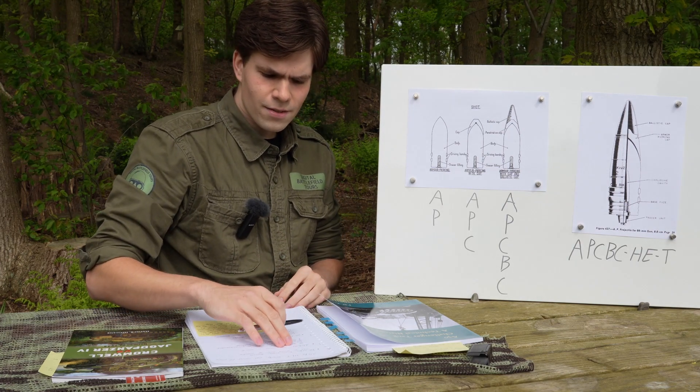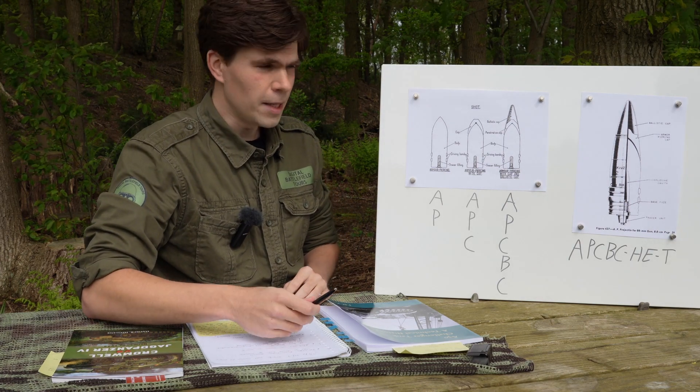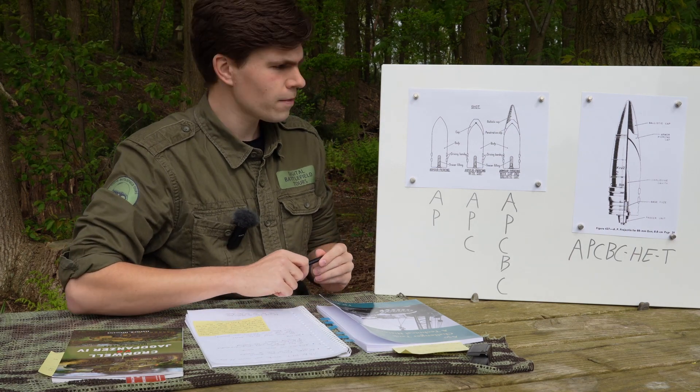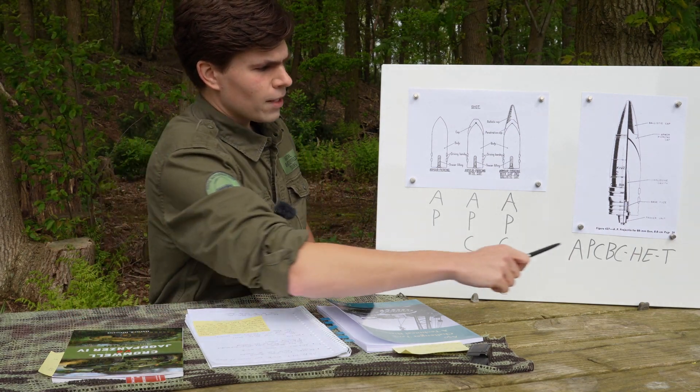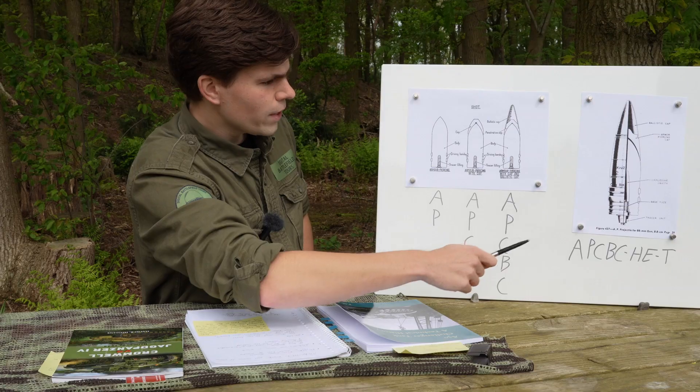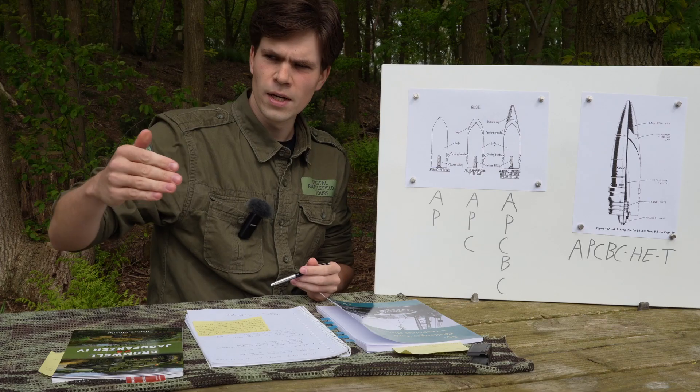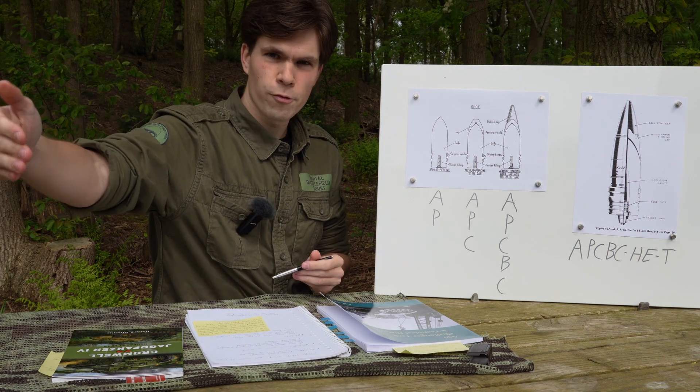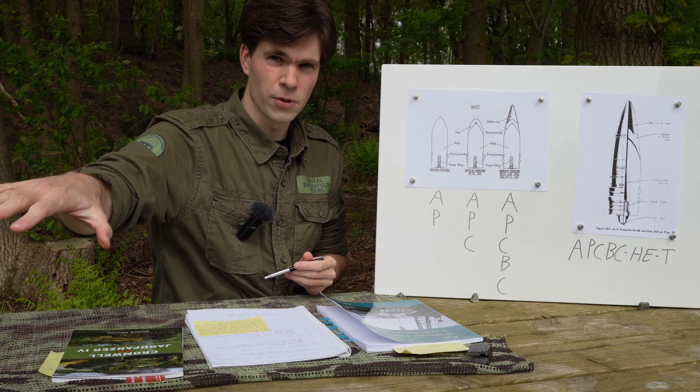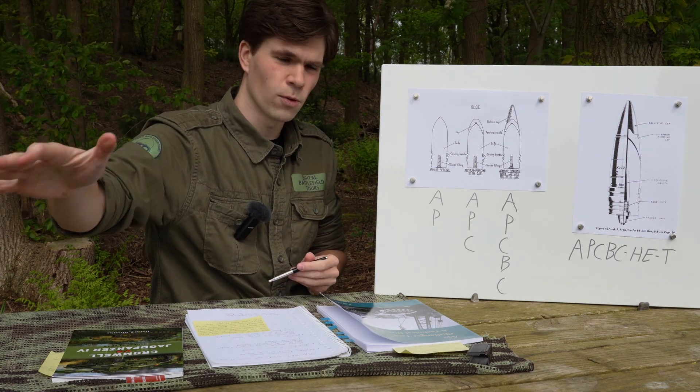So that explains what APCBC is. And then just to skip ahead to the little T at the end - that means tracer. As you can see there's a cavity at the base of these 17 pounder projectiles for a tracer which burns for a second or two so you can see your shot fly through the air and make necessary adjustments.